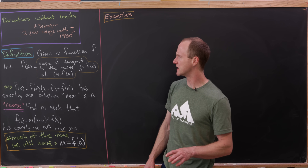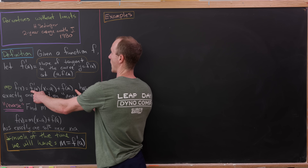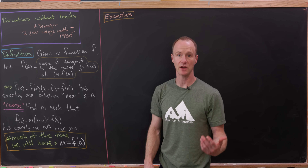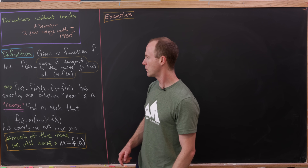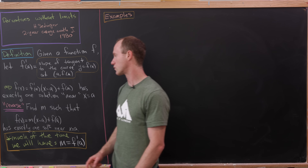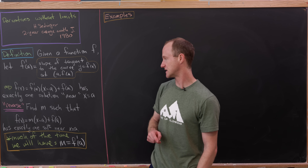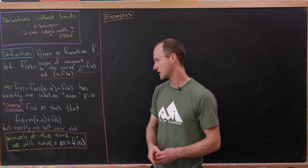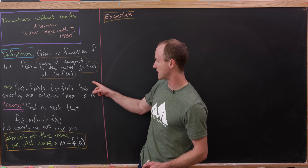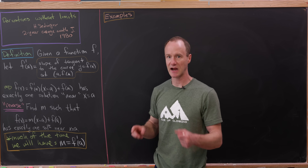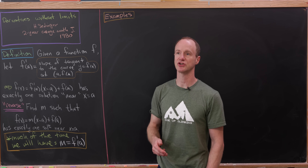Notice that if we have a derivative for a certain function, we can find the equation of the tangent line: f prime of a times x minus a plus f of a. We know that the tangent line and the original curve will intersect exactly once in a region near x equals a. In other words, this equation has exactly one solution near x equals a. I'd like to take this statement — this exactly one solution of intersection — and see if we can reverse it into a definition of the derivative.